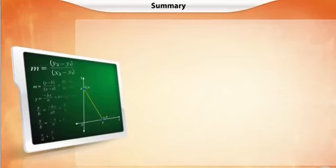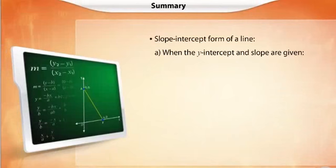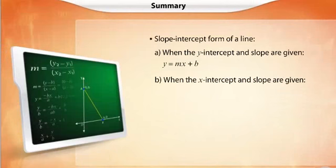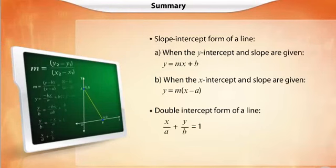Let us summarize what we have learnt in this module. We have seen the slope-intercept form of a line when the y-intercept and the slope are given, and when the x-intercept and slope are given. We have also seen the double-intercept form of a line.